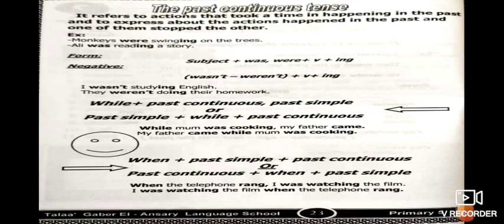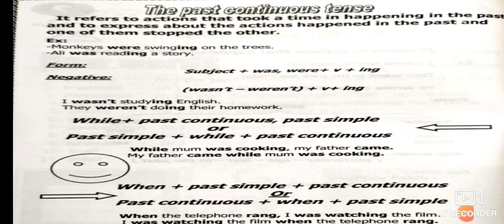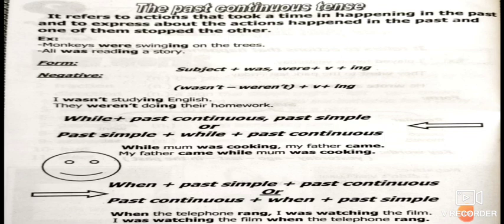Past continuous tense refers to actions that took time in happening in the past — continuing in the past — and also expresses when one action was happening and another action stopped it. Like: I was running (past continuous) and the bus came (stopped the action). I was riding my bike when I fell down — 'fell down' stopped the riding.